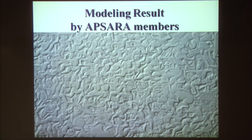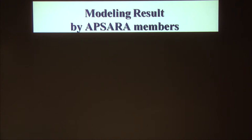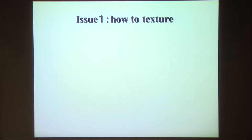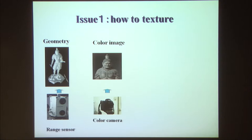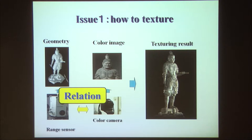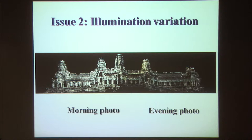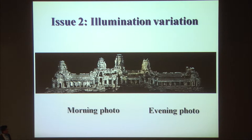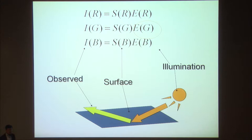Those are the geometry issues. Another issue is photometric modeling. How to obtain relative relations between sensors is one issue, because range data is obtained by range sensors and color images are obtained by color cameras — we have to worry about camera calibration between them. Another issue is illumination: Bayon is a huge structure, so when you begin taking pictures in the morning and finish in the evening, the color is totally different. For preservation purposes we need real color — the observed color is the multiplication of surface color with illumination color, so somehow we have to remove the effect of the sun.